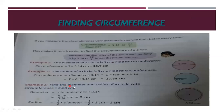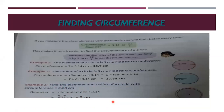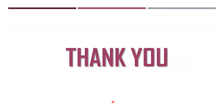Example 3: find the diameter and radius of a circle with circumference 6.28 cm. Diameter = circumference ÷ 3.14 = 6.28 ÷ 3.14 = 2 cm. Radius = ½ × diameter = ½ × 2 = 1 cm. This is the way of finding circumference. I hope you understood what we learned in this lesson. Thank you.